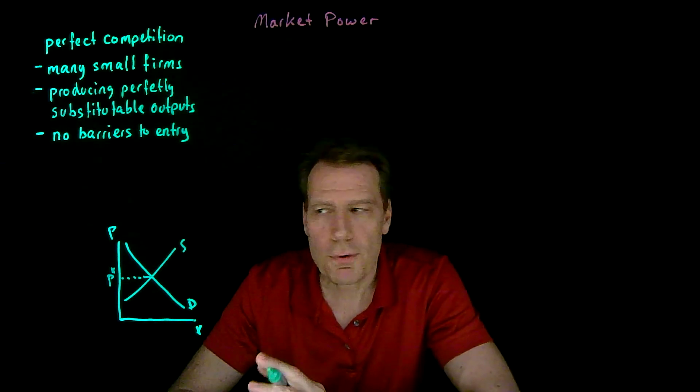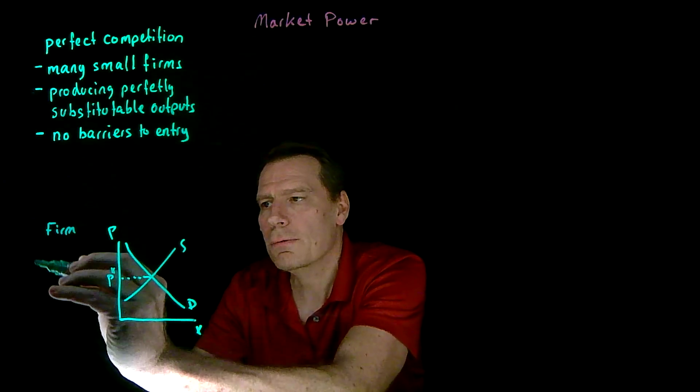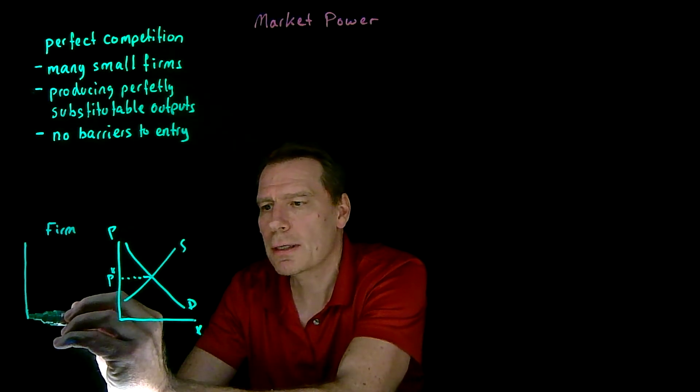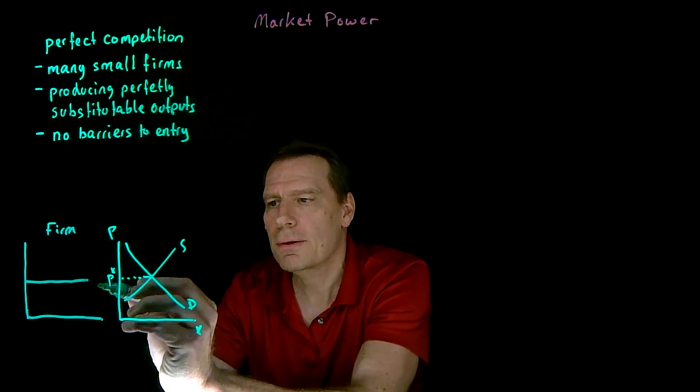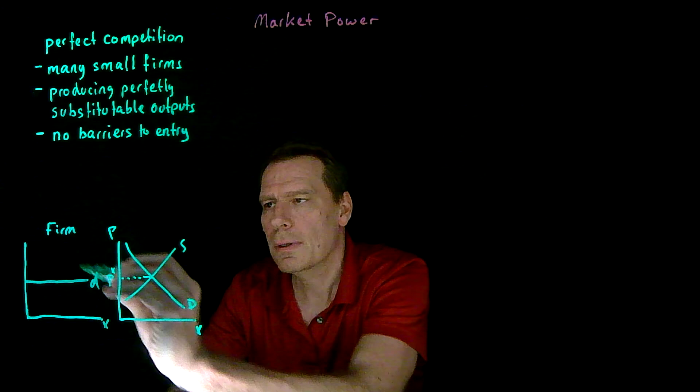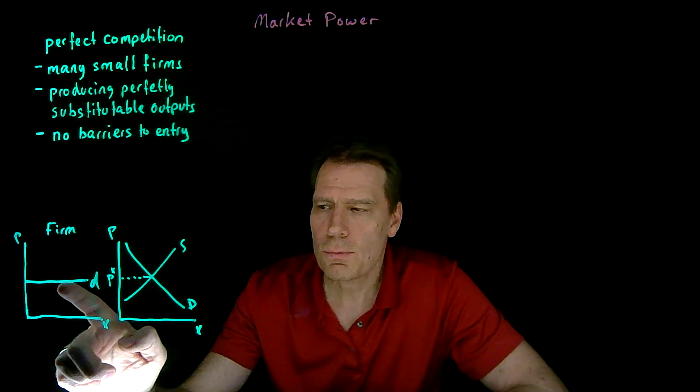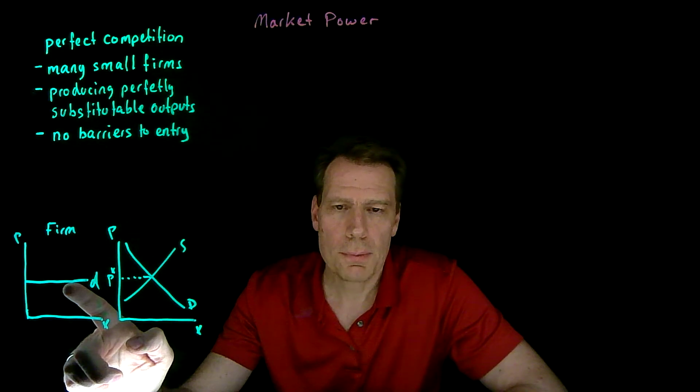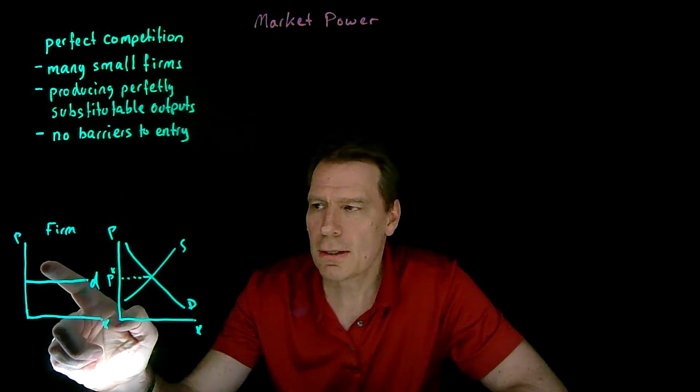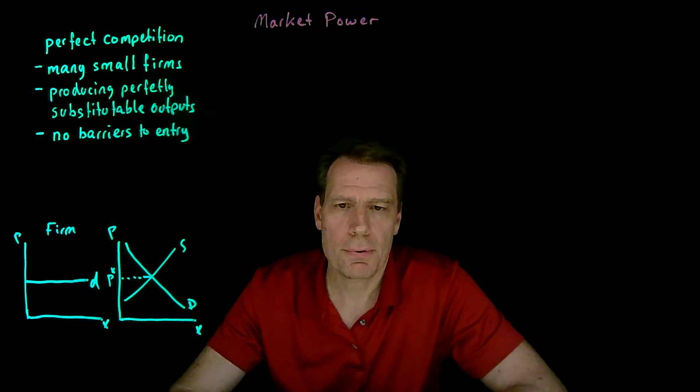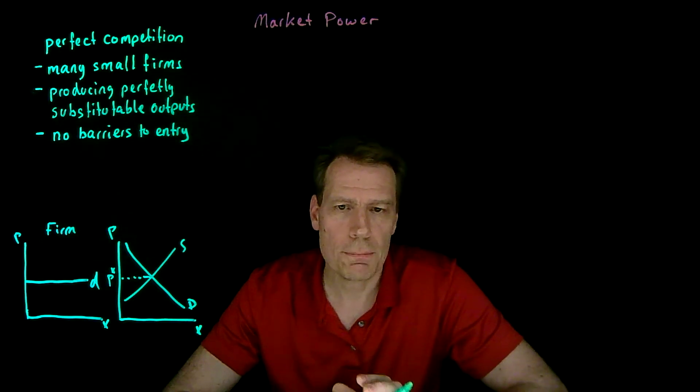From the perspective of the firm, the demand curve for that firm's products is perfectly elastic at the equilibrium price. The firm is small enough that it can sell anything it wants at that equilibrium price without affecting that price. But if it tries to sell at a higher price, it won't sell anything, because consumers will just go to competing firms.